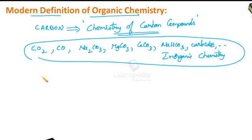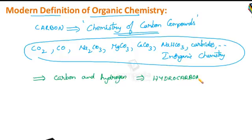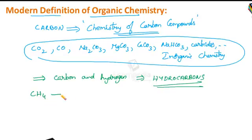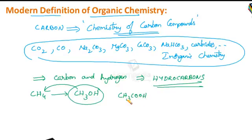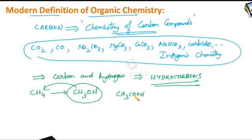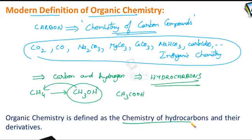Later on, it was found that the simplest organic compounds contain both carbon and hydrogen, and those compounds were named hydrocarbons — compounds of carbon and hydrogen. All other organic compounds may be regarded as derivatives of these hydrocarbons, meaning compounds obtained by replacing one or more hydrogens with different atoms or groups. For example, when one hydrogen of methane is replaced by an OH group, we get an alcohol. Acetic acid is also a derivative of methane because one hydrogen is replaced by an acid group.